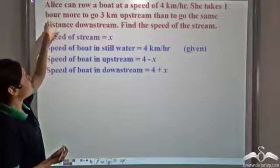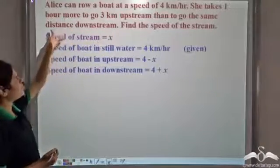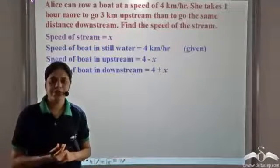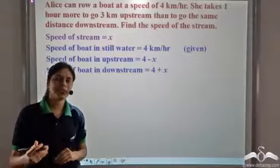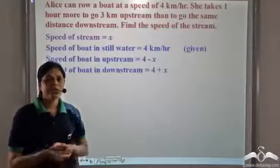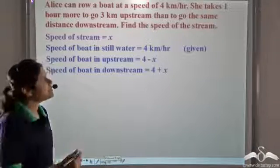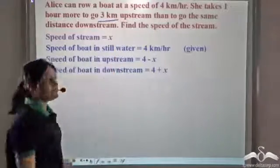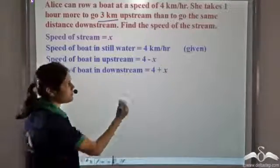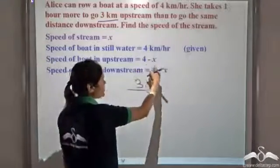What else is given to us? The time taken. She takes one hour more to go 3 km upstream than to go the same distance downstream. We need to find the time taken by Alice to go upstream and downstream. We know that time is equal to distance by speed, and the distance rowed is 3 km. So the time taken to go upstream will be 3 divided by the speed upstream, which is 4 minus x.